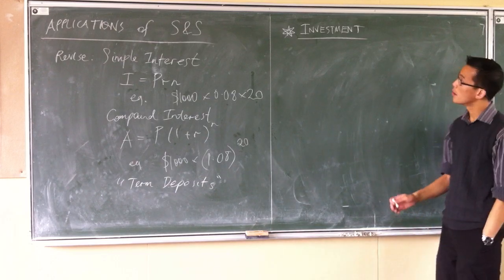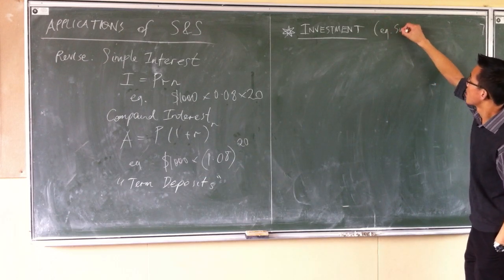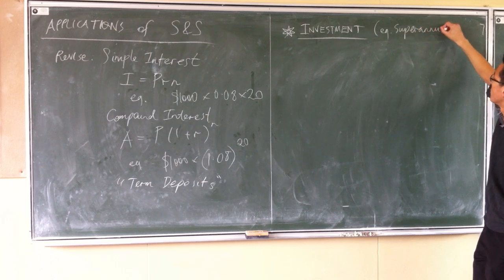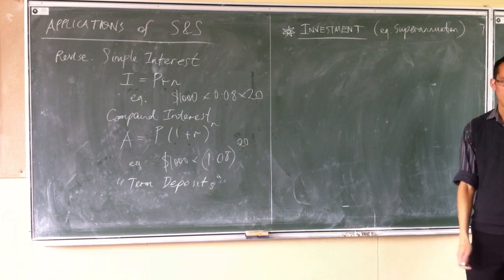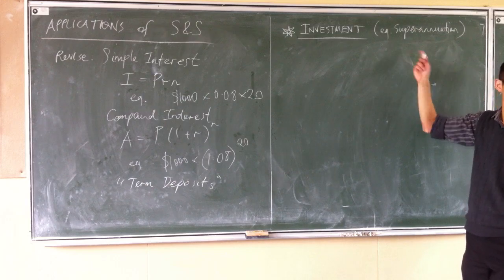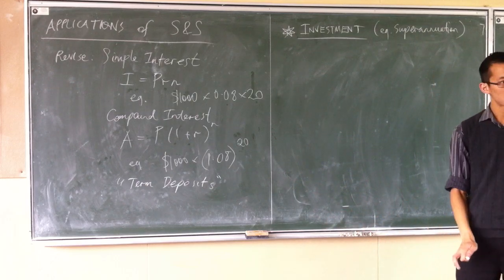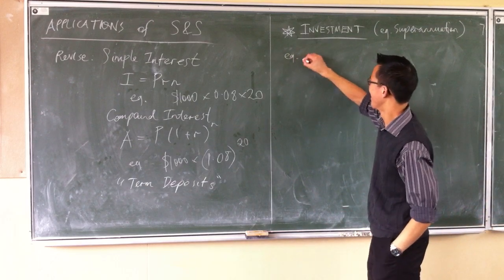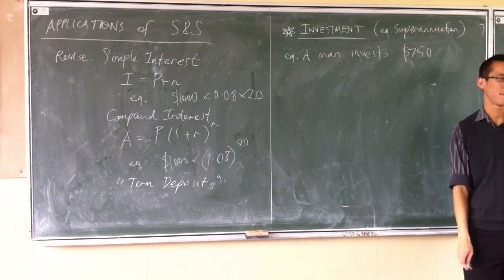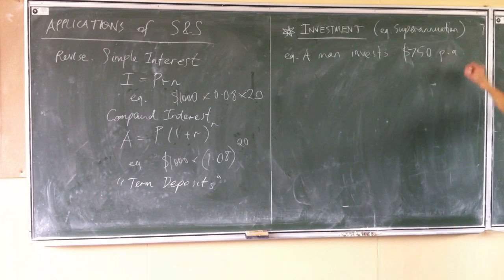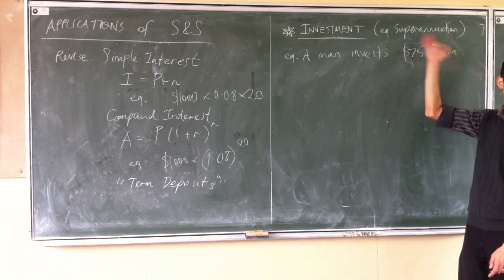Now before I get into it, I'm going to tell you right off the bat the main example of investment we talk about is superannuation. So as I go through this example, I'm going to keep referring back to how superannuation works, because most of you don't have jobs, and even if you do, a lot of people have jobs and never think about how this works. I'm going to try and draw parallels with how this works.